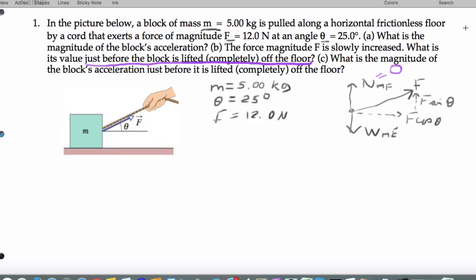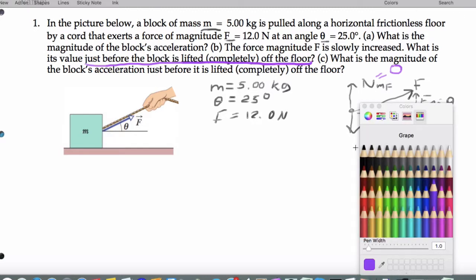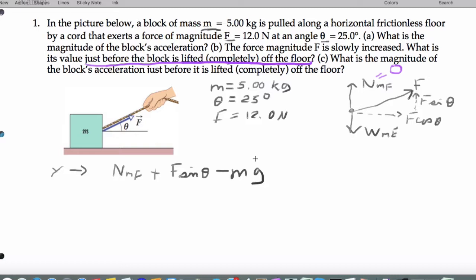Now what I'll do is set up the vertical force equation in the Y direction using Newton's second law. I have the normal acting on the mass from the floor, the vertical component of the force pulling up on it, and opposing these two forces is the weight pointing downwards. The effect of all three is that the forces end up canceling.